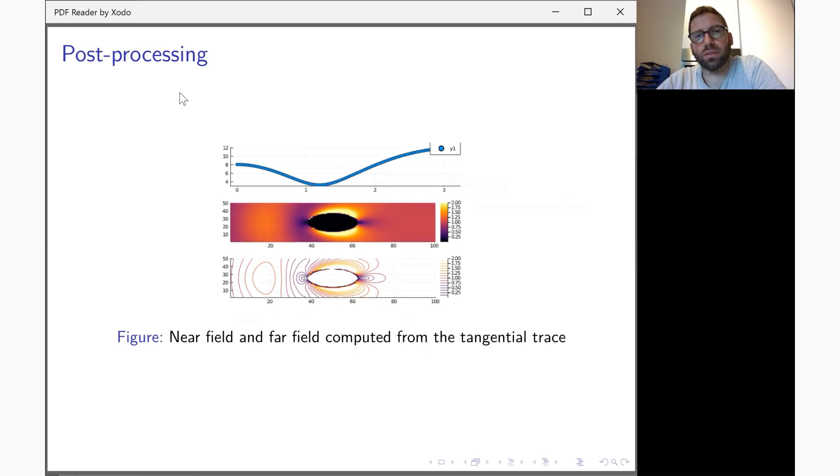Then you can, using Plots, make various pictures of these secondary quantities. Here you can see, for example, the far fields along an arc, a meridian arc going from zero, the north pole, to pi, the south pole, and the near field both as a heat map and a contour plot in the vicinity of the object. You can see that the contours are detached from the object, which is typical for a radiating solution that carries energy away from the scatterer.